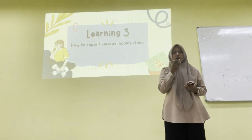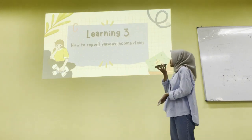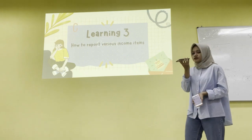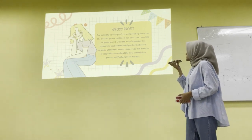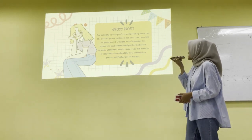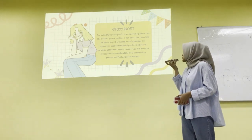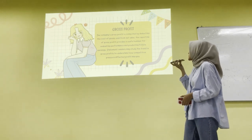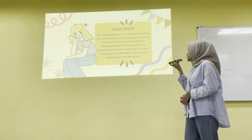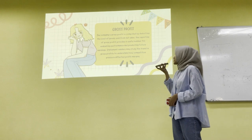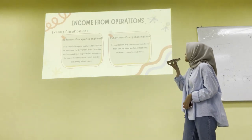Learning objective 3 will be presented by Sabina. I'm Sabina and I will present about how to report various income items. The first one is gross profit. A company's gross profit is computed by deducting the cost of goods sold from net sales. Reporting gross profit provides a useful number for evaluating performance and predicting future earnings. Statement readers may study the trend in gross profit to understand how competitive pressure affects profit margins.